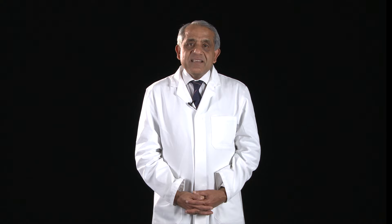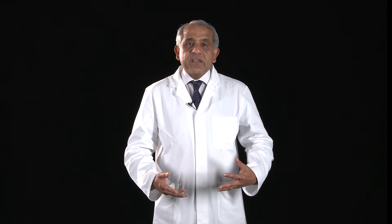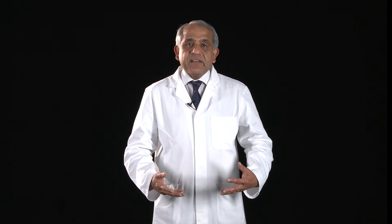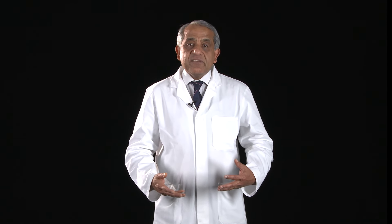The tracheobronchial tree develops in concert with the pulmonary trunk and the pulmonary arterial tree. So every time the tracheobronchial tree bifurcates or divides, it does so in concert with the pulmonary arterial tree.